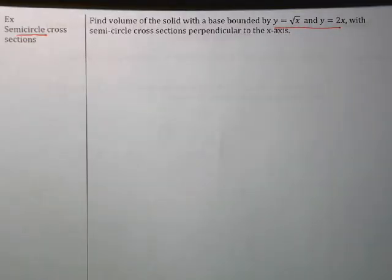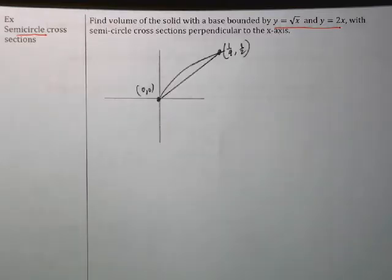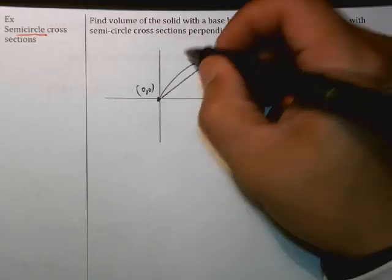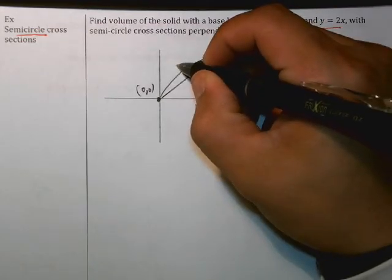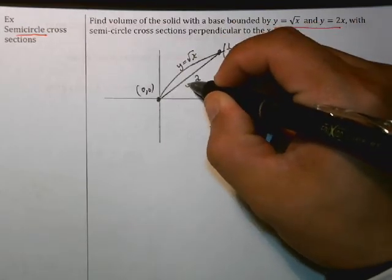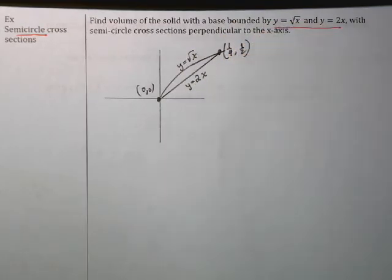Let me draw this picture and then we can investigate what this object looks like. Okay, so this is what the picture looks like. The upper curve here is y equals the square root of x and the lower curve is y equals 2x.